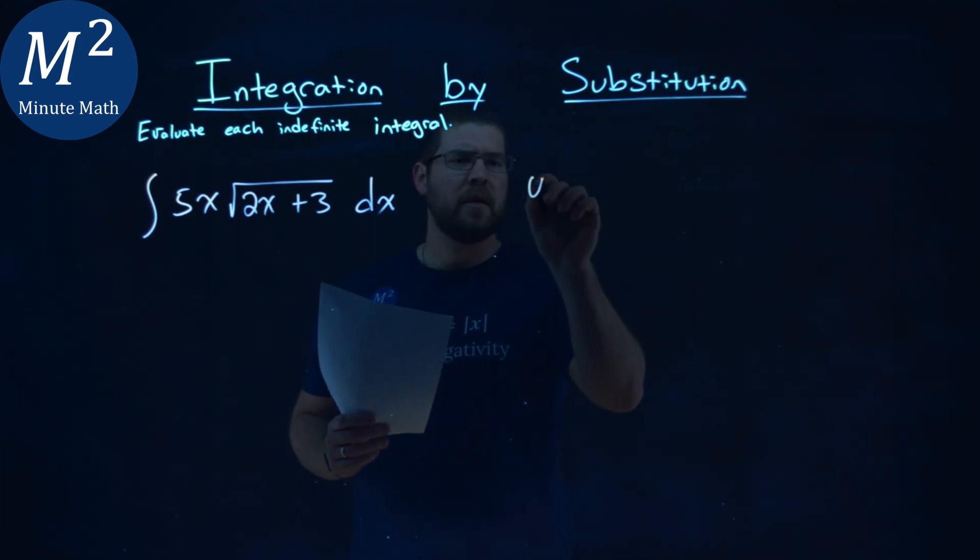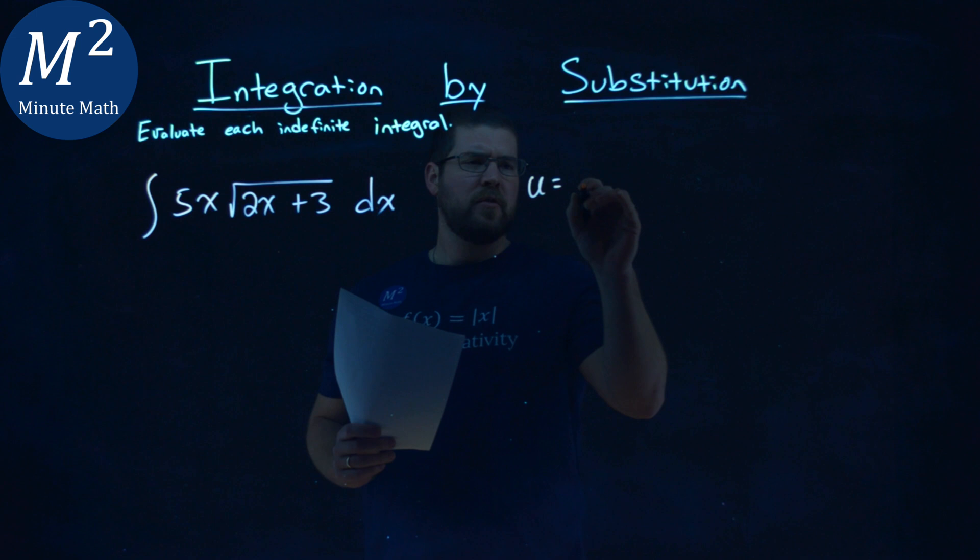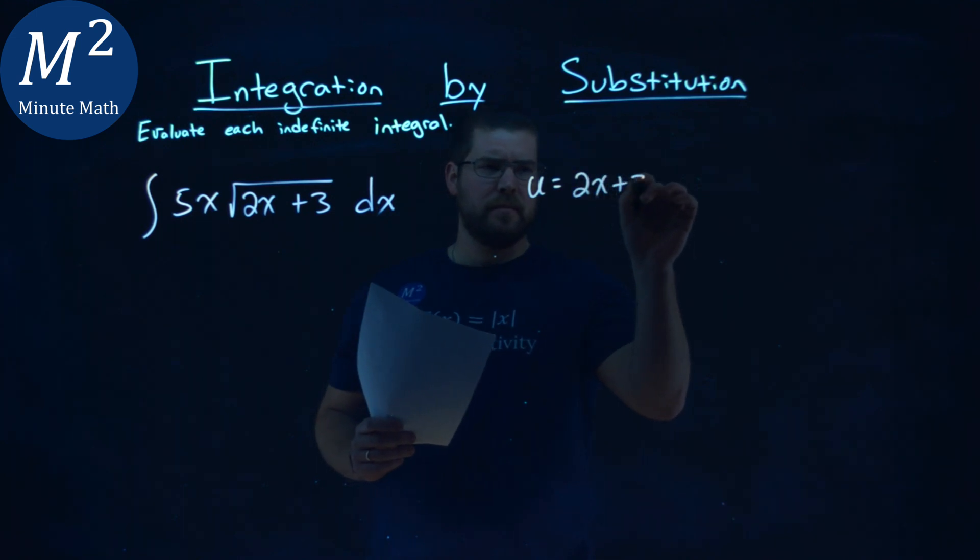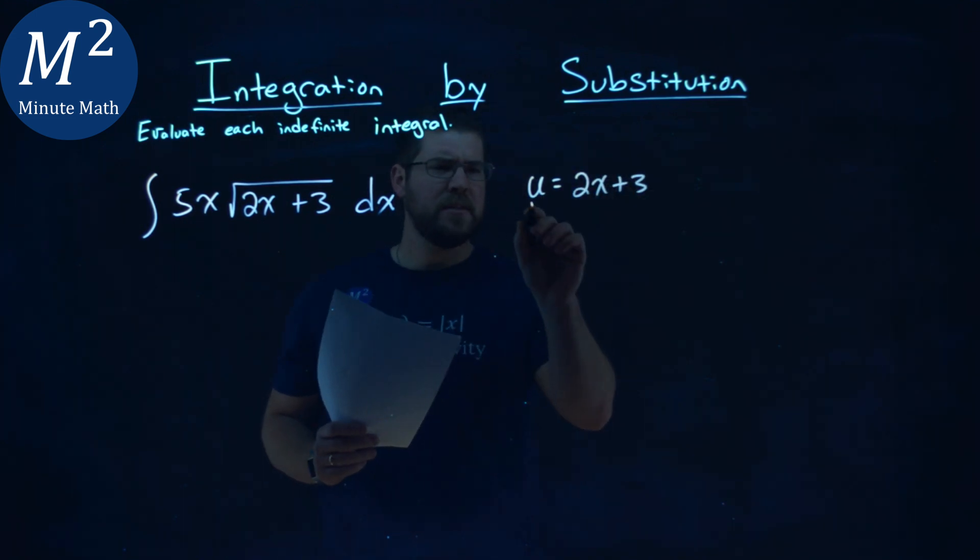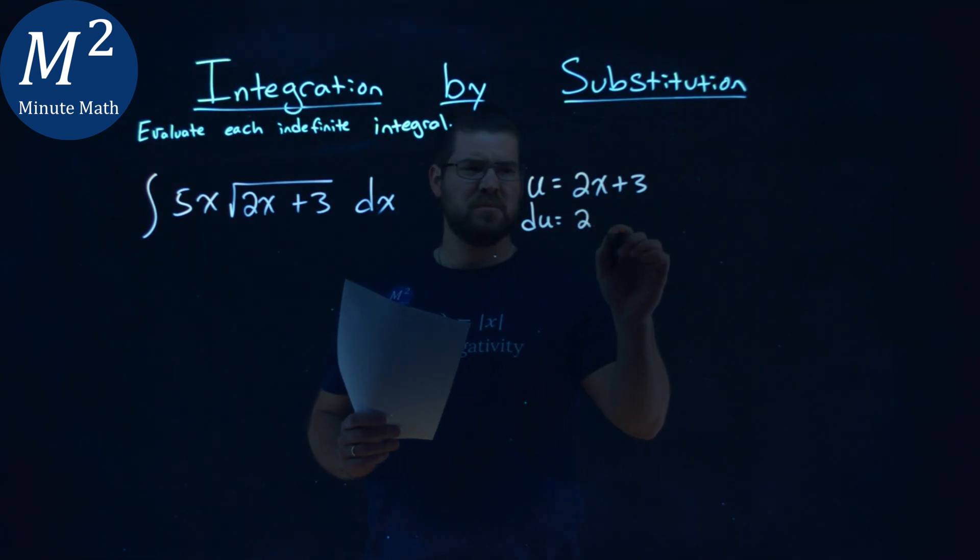I need to find a u value. I generally set my u value to be what's inside of something kind of crazy. In this case, the square root. So if I set u to be 2x plus 3, what's my du? The derivative of that is just a 2 dx.